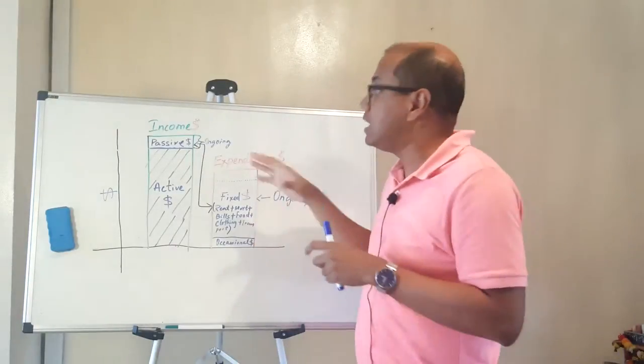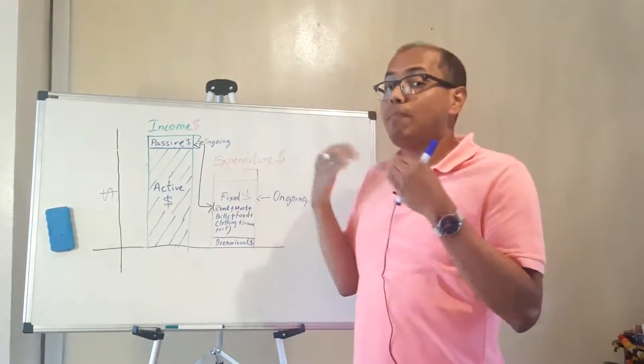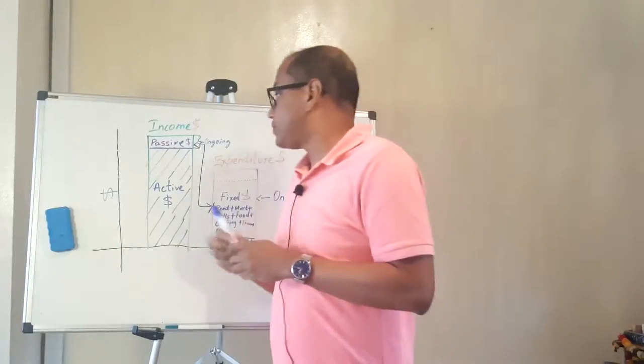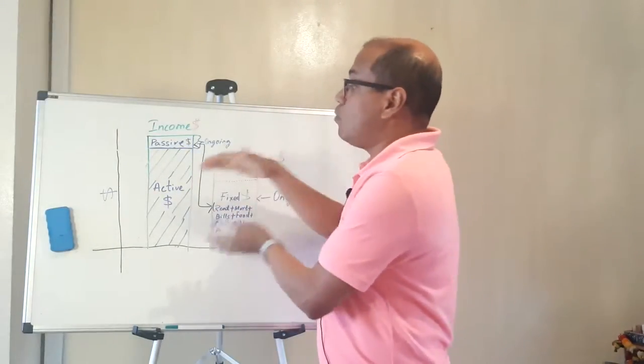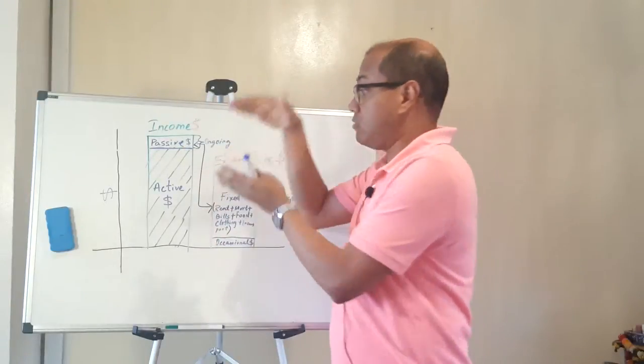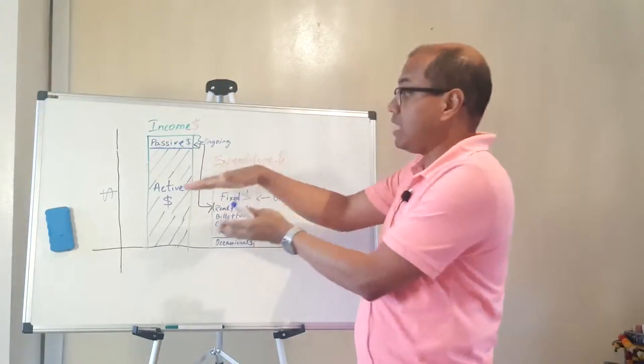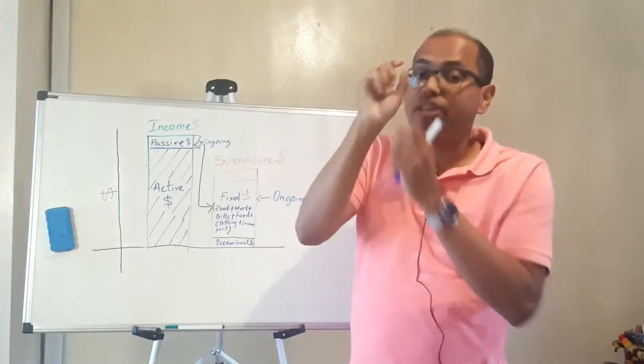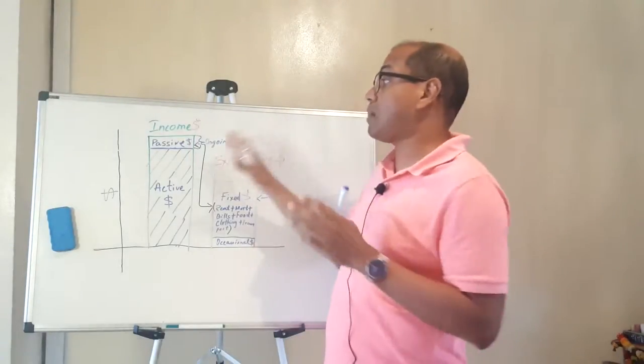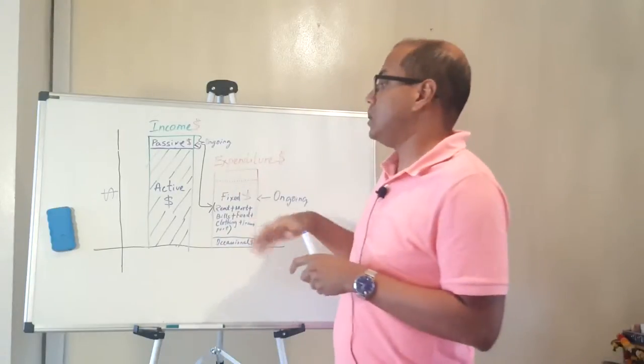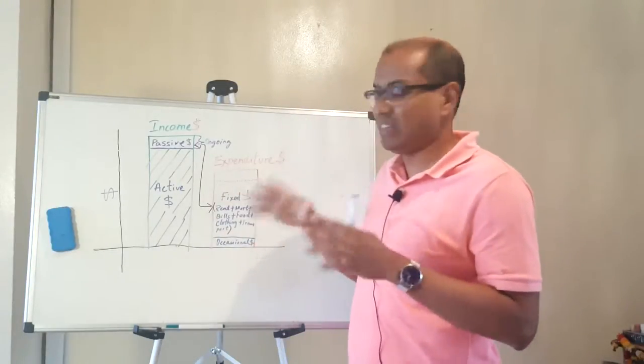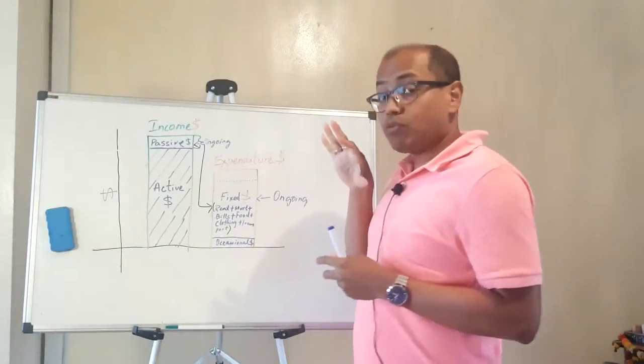Now, most people you'll find that their income, the majority or big chunk around 95% of their income is active and a very small segment is passive income. Or a lot of times you'll find people don't have passive income at all. They're only trading hours for money and they get really tired.